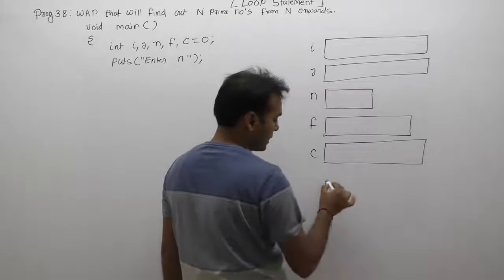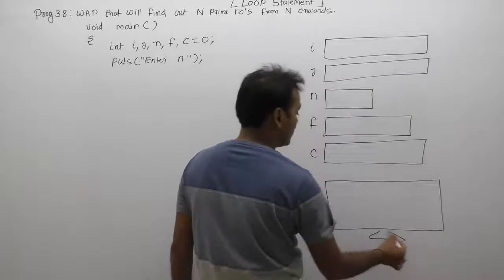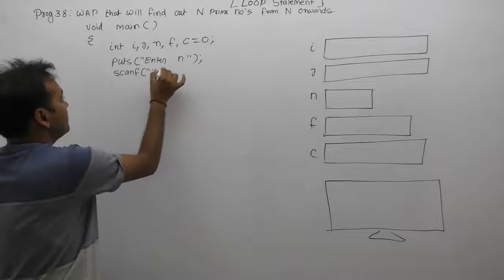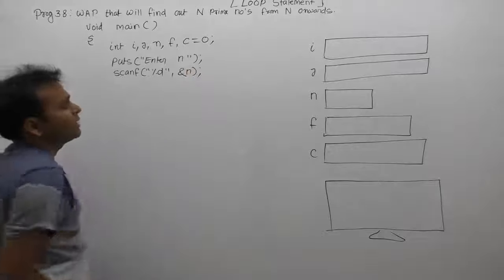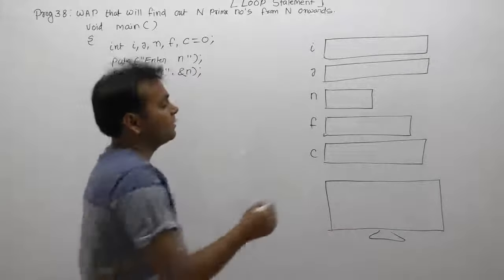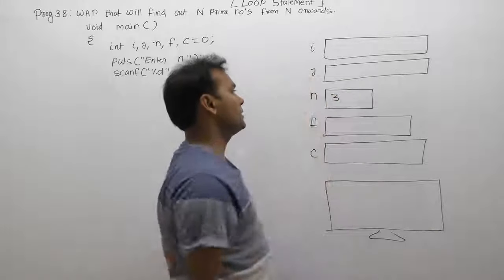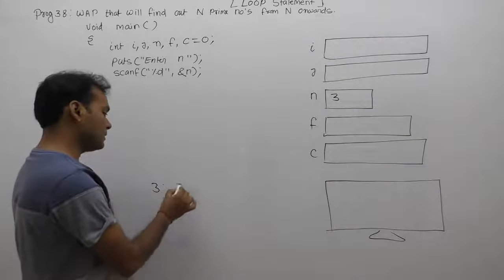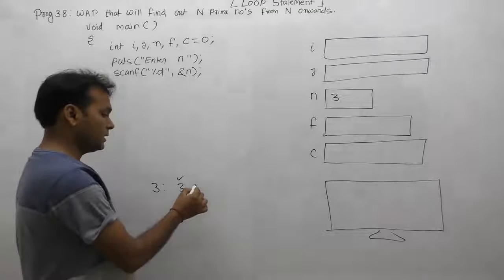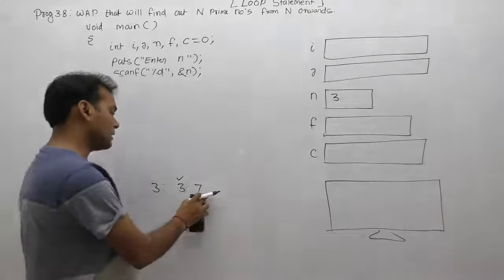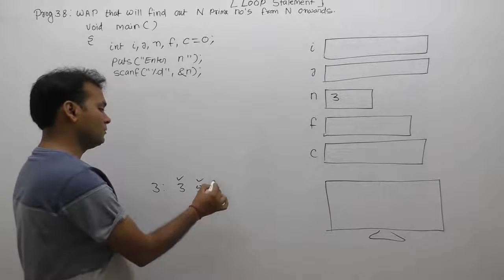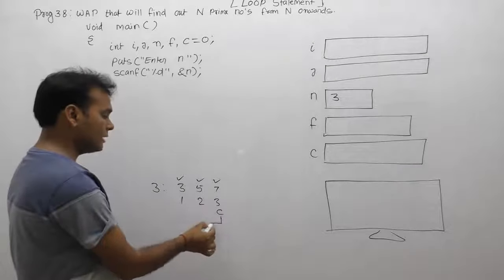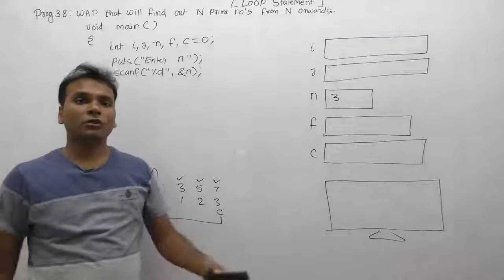After that, we enter or read the value of N using scanf with %d. For a small test, suppose we enter the value of N as 3. So 3 is stored in variable N. Then 3 itself is prime, and next coming prime numbers from 3 onwards are 5 and 7. So the total count is three: count becomes 1 the first time, then 2, then 3. Once counter C's value matches N, we immediately stop the process.